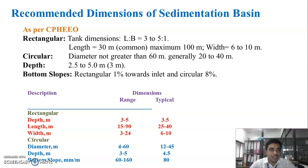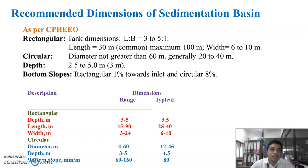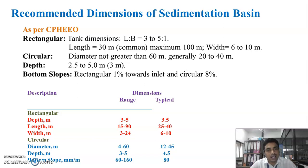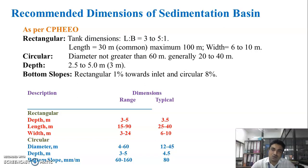As per the CPHEEO — that is Central Public Health Environmental Engineering Organization — for a rectangular tank, the length to breadth ratio (L to B) should be 3 to 5 as to 1. The length can commonly be taken as 30 meters, or maximum up to 100 meters. The width of the sedimentation tank varies from 6 to 10 meters.